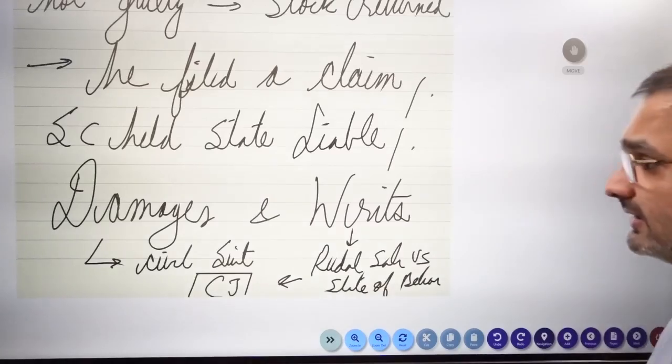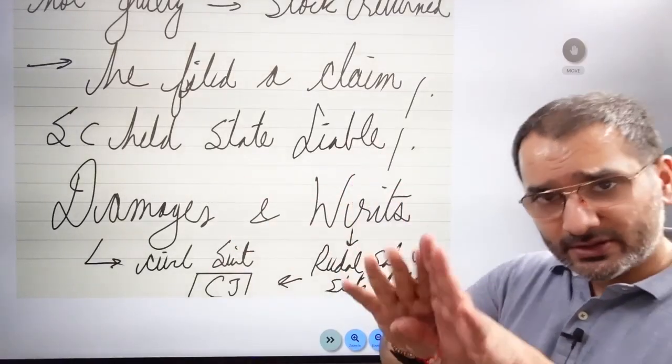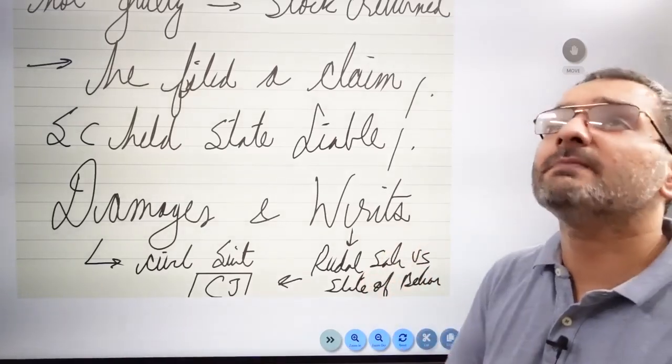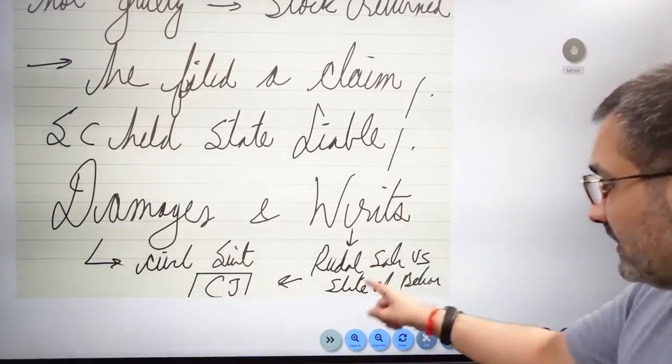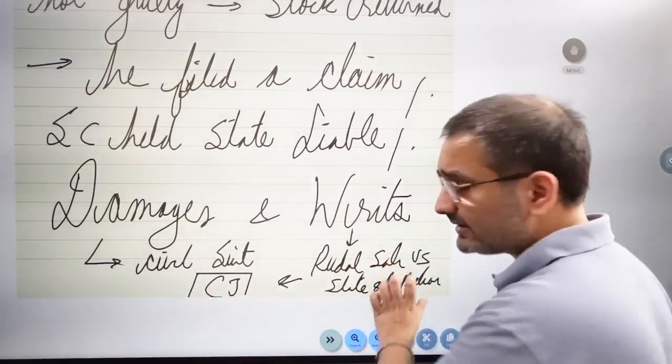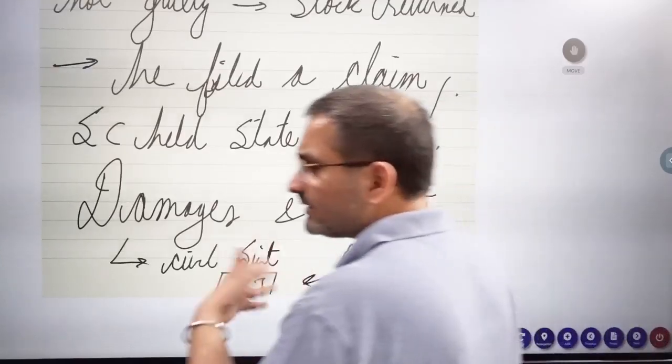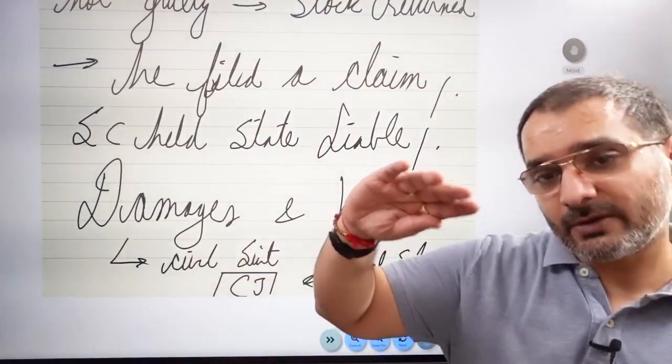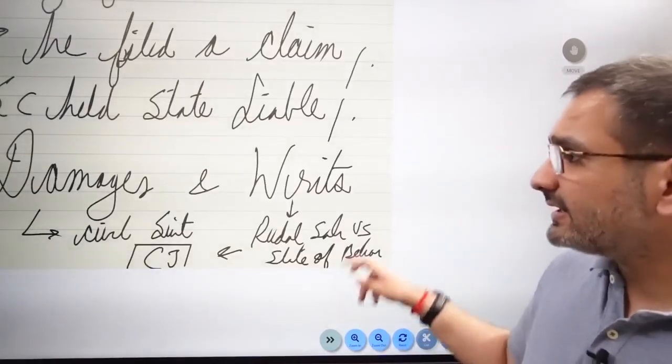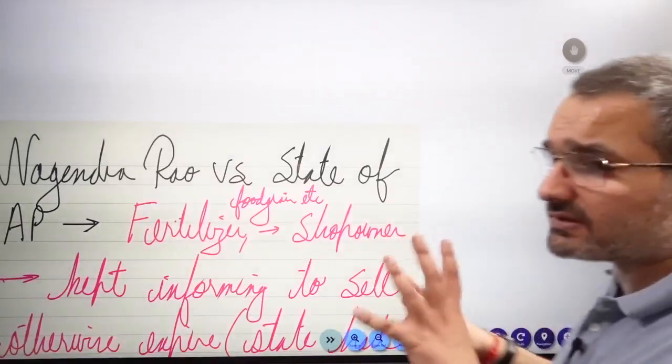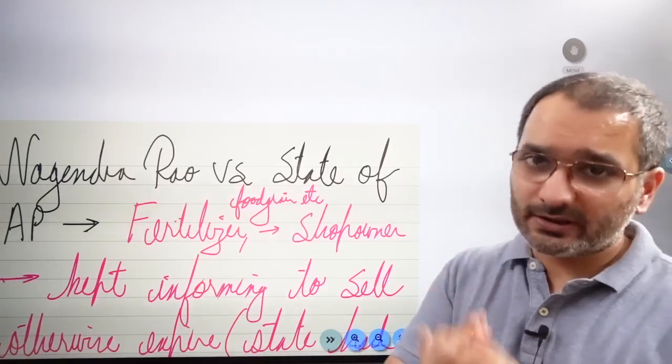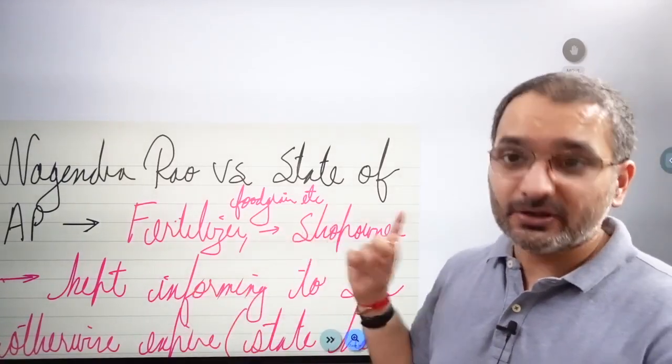What are your remedies? Civil suit. The principle of compensatory jurisprudence was propounded in Rudal Sah vs State of Bihar. The funda was given that if your fundamental rights are being violated, you can go to the Supreme Court. For your fundamental rights being violated, the Supreme Court will pay you money. This is the new brand of getting money from the states through writ. Do mention that despite the Supreme Court and Law Commission suggesting time and again for the government to enact a law clarifying what is sovereign and non-sovereign, they haven't really done so because that's an escape route for them.